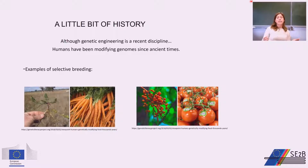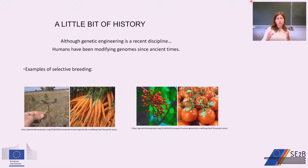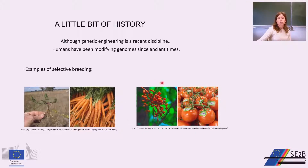Although genetic engineering is a recent discipline, humans have been modifying genomes since ancient times. Since the beginning of civilization, humans have been selecting plants with the best traits in order for offspring to carry those traits. After centuries of selective breeding, wild tomatoes that would look very small have become the tomatoes we know today.